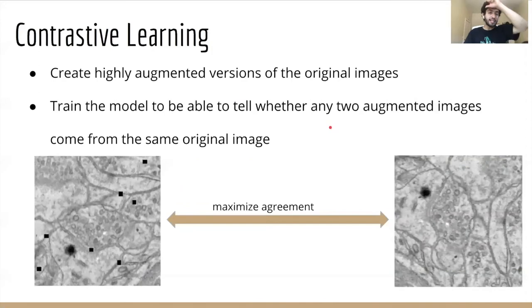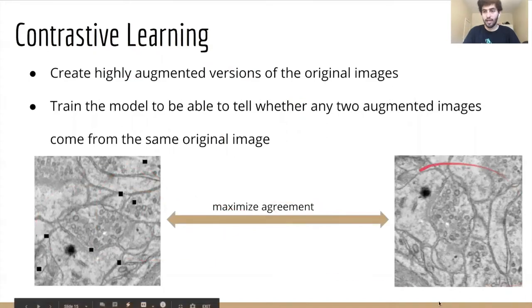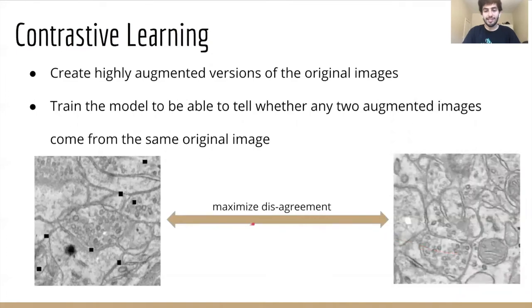In our last method, we use a different self-supervised learning technique known as contrastive learning. In contrastive learning, the critic is trained to maximize the agreement between augmented versions of the same image, as shown here on the left and on the right, while simultaneously trained to maximize the disagreement between augmented versions of different images, as shown here on the left and on the right.